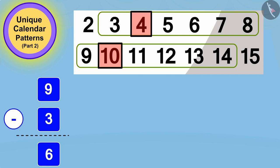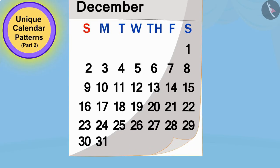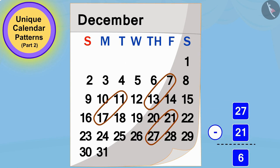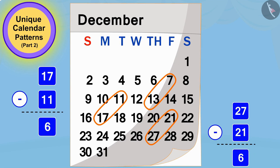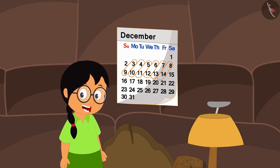Children, if we subtract 3 from 9, how much will it be? Absolutely correct — 6! Now if we see the next pair of numbers, 4 and 10, after subtracting 4 from 10, once again 6 is left. Yes children, we will find the same pattern in any such pair of two diagonal numbers in the calendar — the difference between those two numbers will be 6.